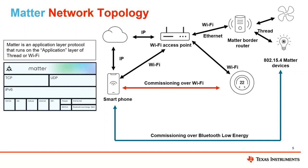Being MATTER certified, all of these devices could come from different vendors. Looking at the smartphone, you have the option to commission over Wi-Fi — for example, a thermostat being commissioned over Wi-Fi and talking directly over MATTER-enabled Wi-Fi to an access point. You also have the option to commission over Bluetooth Low Energy. If you want to commission a light bulb device that doesn't have Wi-Fi, there's hardware available that can run both MATTER and Bluetooth Low Energy, and that BLE commissioning is built into the spec.